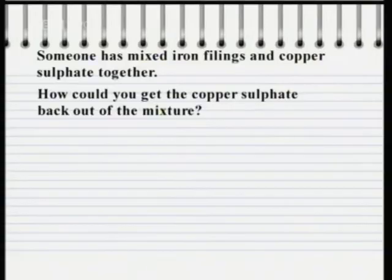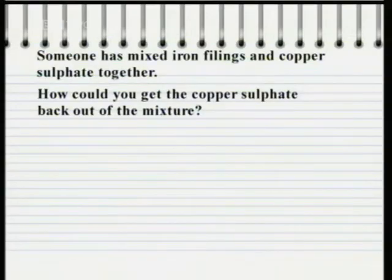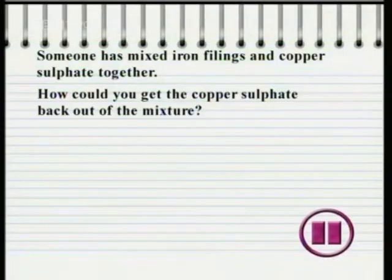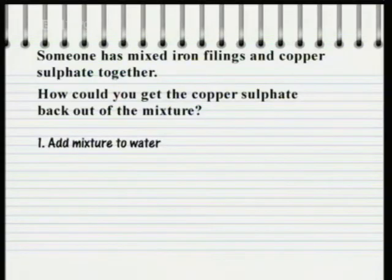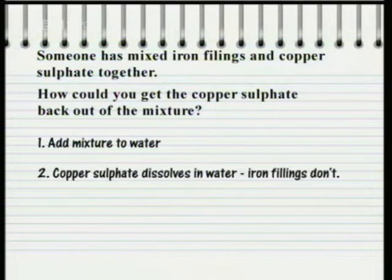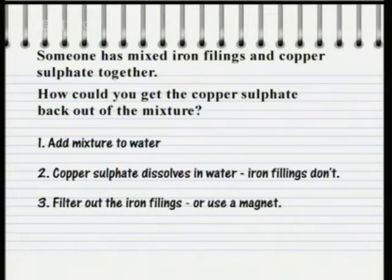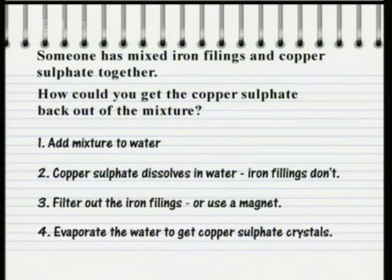Here's a question about separating materials. Someone has mixed some iron filings and copper sulphate powder together. How could you get the copper sulphate back out of the mixture? One way: add the mixture to a beaker of water — the copper sulphate dissolves and the iron filings don't. You can then filter out the iron filings, or use a magnet. Finally, evaporate the water to get back the solid copper sulphate crystals.